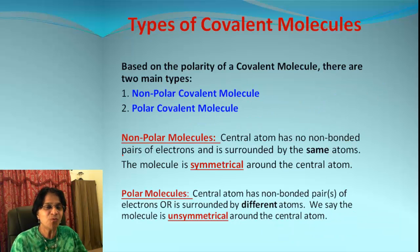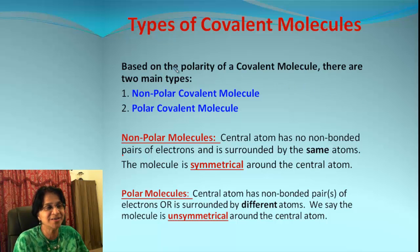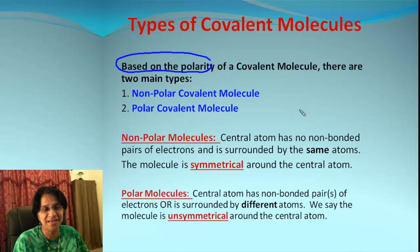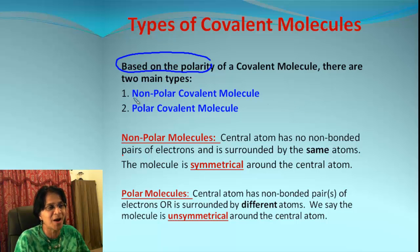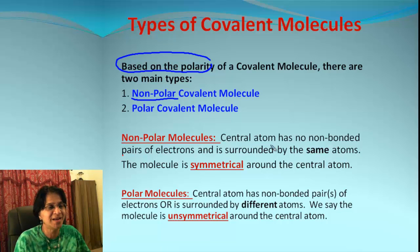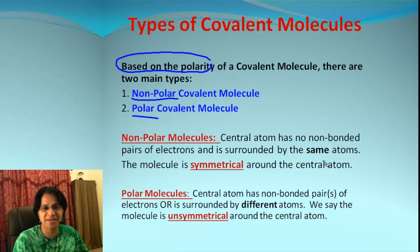But before that, what are the different types of covalent compounds? Let's find out more about polarity. Based upon polarity, we have two different main classes of covalent compounds. One of them is called a non-polar covalent compound and the other is called a polar covalent compound.